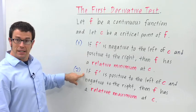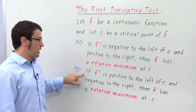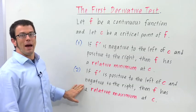And if f prime is positive to the left of c and negative to the right, then f has a relative maximum at c.